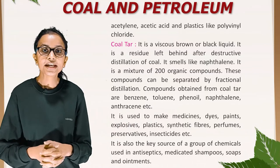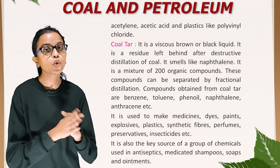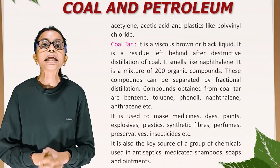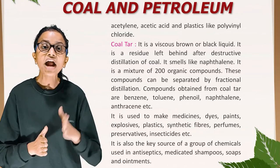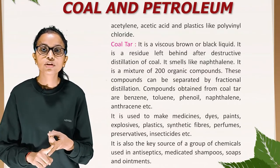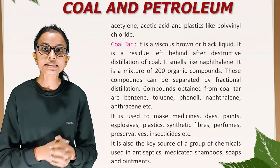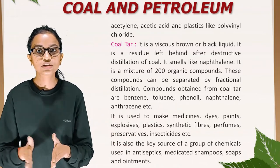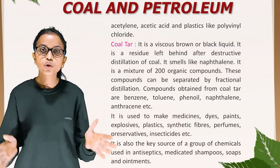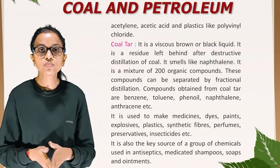Coal tar is a viscous brown or black liquid; it is the residue left behind after destructive distillation of coal. It smells like naphthalene and is a mixture of about 200 organic compounds that can be separated by fractional distillation. Compounds obtained from coal tar include benzene, toluene, phenol, naphthalene and anthracene. It is used to make medicines, dyes, paints, explosives, plastics, synthetic fibers, perfumes, preservatives and insecticides. It is also the key source of chemicals used in antiseptics, medicated shampoos, soaps and ointments.